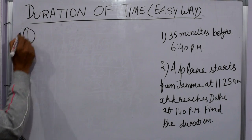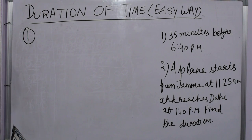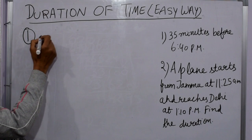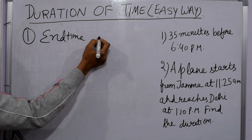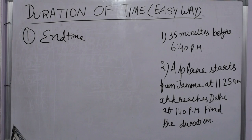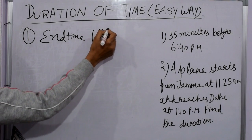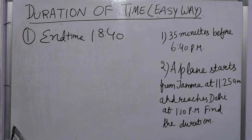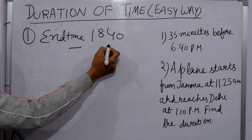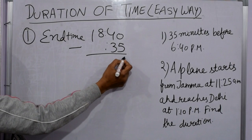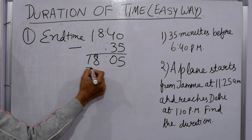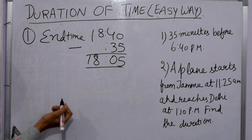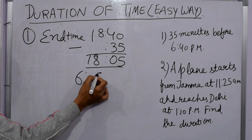Our first sum is: 35 minutes before 6:40 PM. It means 6:40 PM is the ending time — we are given the end time. 6:40 PM converted into 24-hour clock gives us 18:40. Now, 35 minutes before means we have to subtract: 18:40 minus 0:35 gives us 18:05. This is our answer — 18:05, or you can say 6:05 PM.